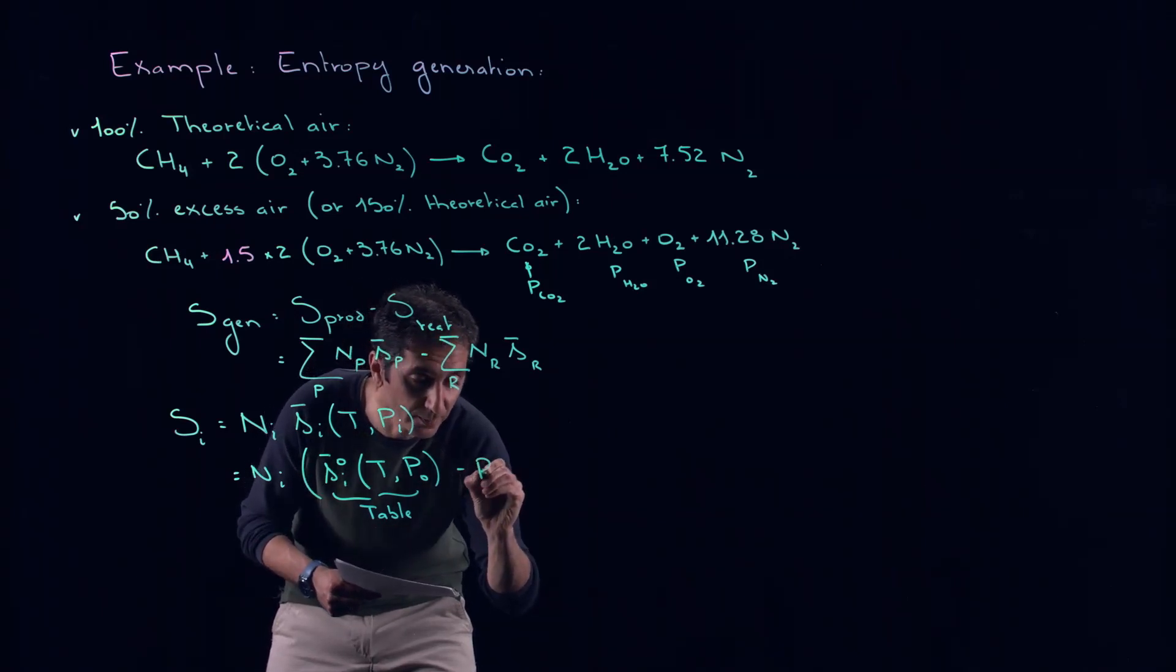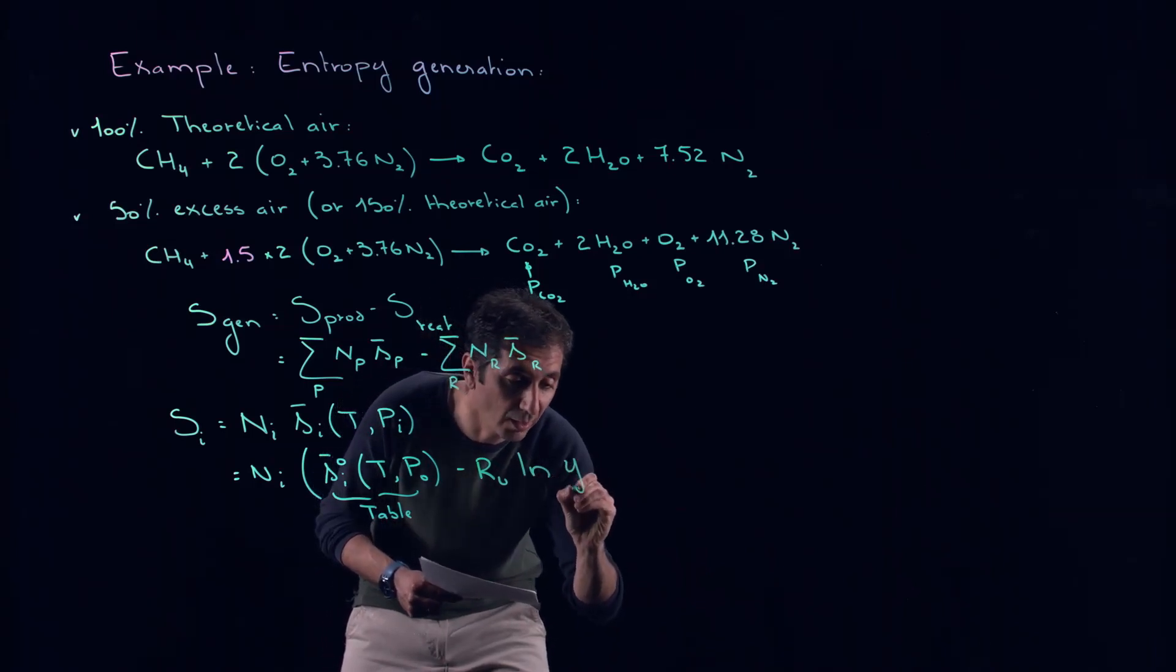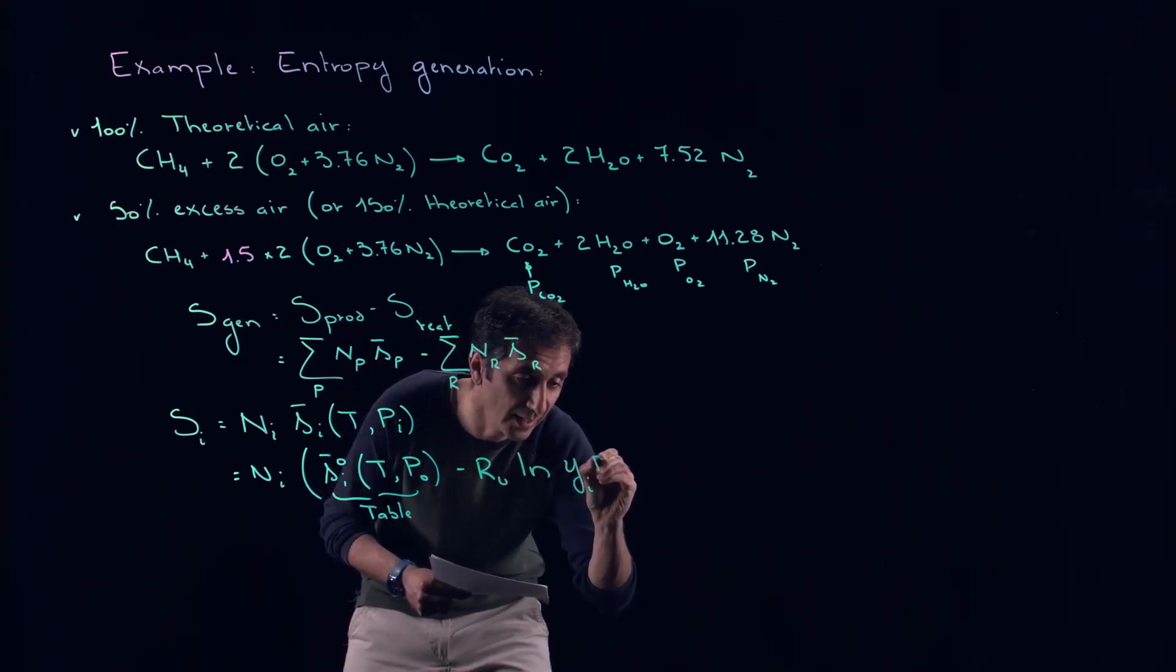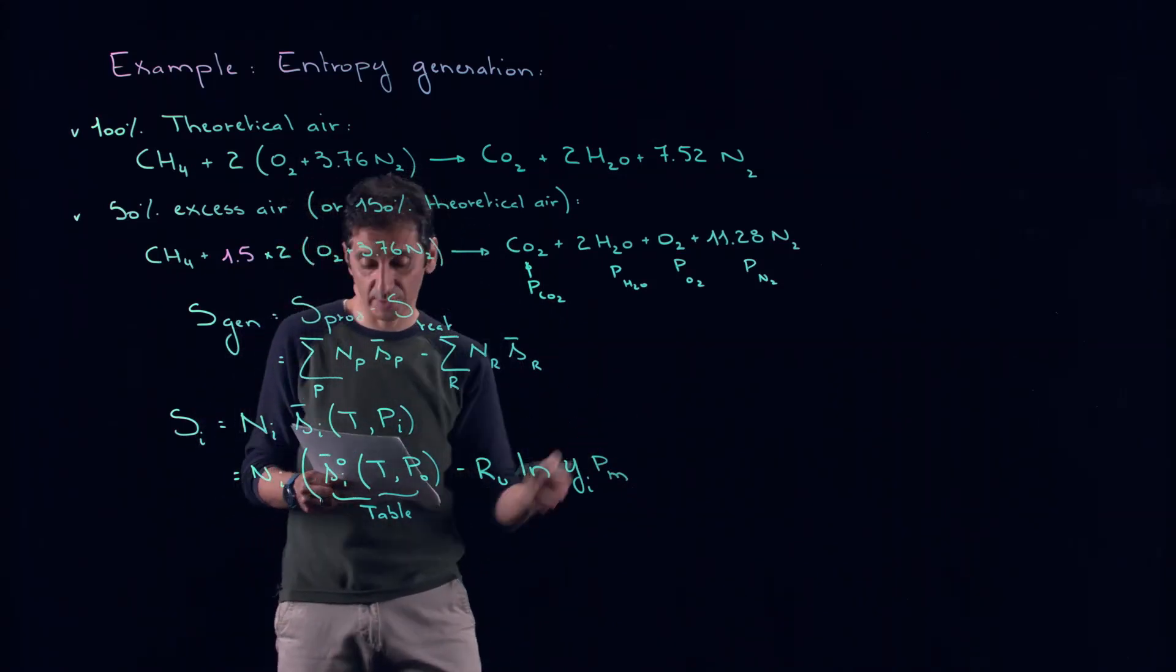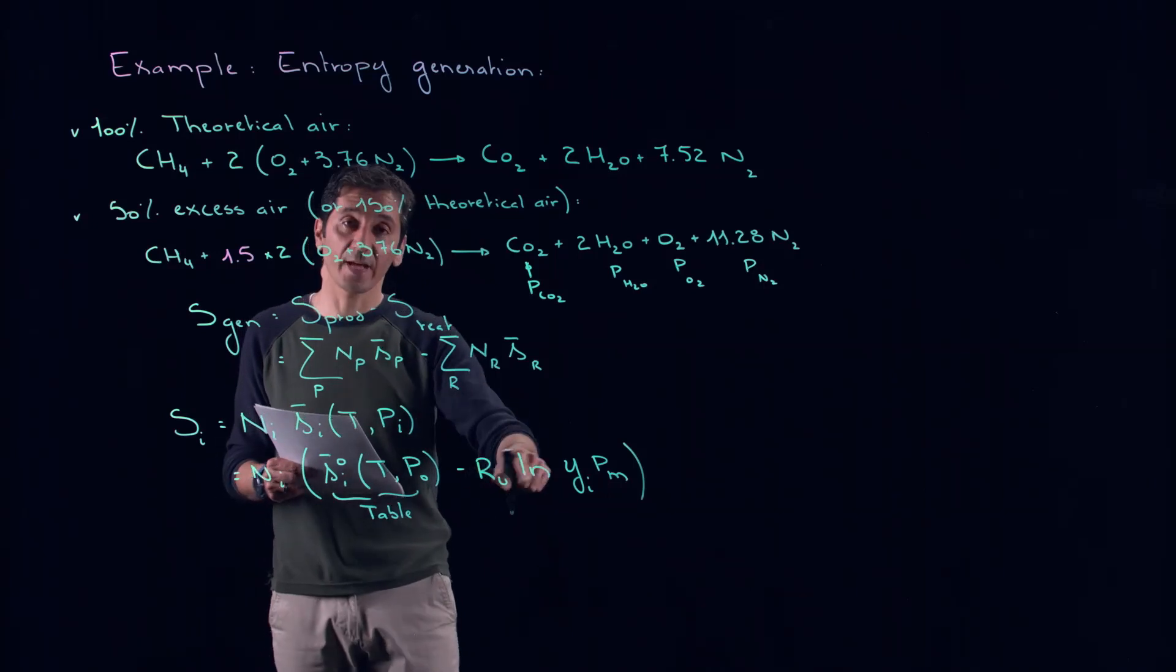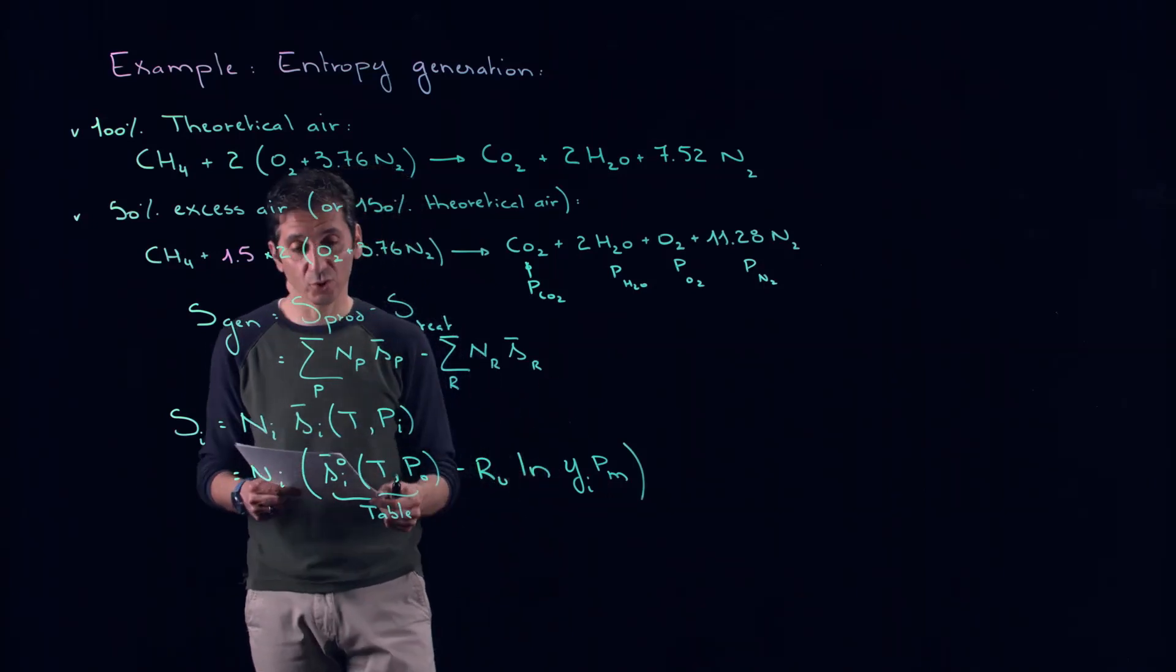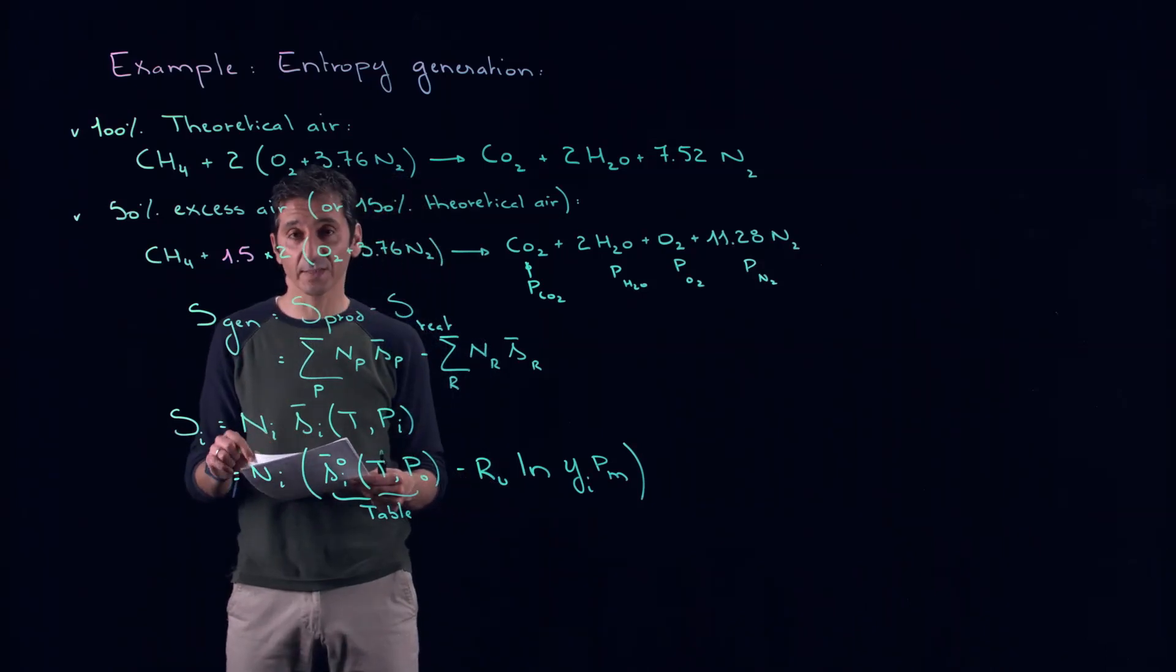Minus RU, the universal gas constant, times LN of YI times PM. Here I'm dropping the P zero because in our case P zero is equal to one atmosphere. This will consider the fact that we are dealing with partial pressure and not the total pressure.